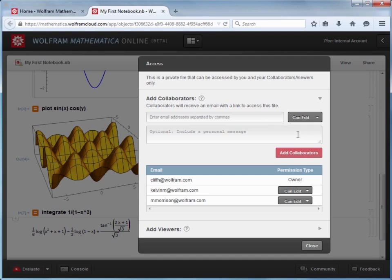Adding viewers is a similar process. Now, you can add as many collaborators as you would like, although, as mentioned, they will need to have their own Mathematica Online subscriptions. You can also add multiple viewers up to the limits provided by your account. And if you need additional viewers, you can upgrade your account to increase those limits.